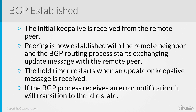If the BGP process receives an error notification, it will transition to the idle state. An error notification could be the wrong autonomous system number, the wrong IP address being sourced from the TCP message, or the wrong update source information. It could be where the traffic is coming from or going towards, or the information inside the message. You may also be trying to form a peering where a password is configured on one side and not the other. You'll see what this means in more detail — I'll configure it right, then I'll configure it wrong, so you'll see what it looks like and how to fix it.